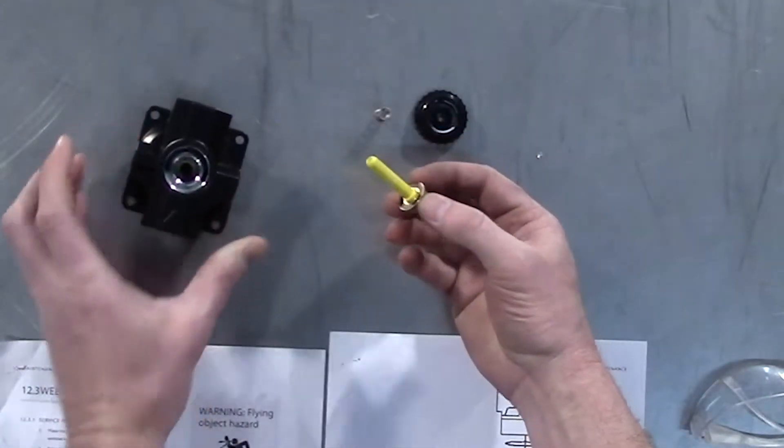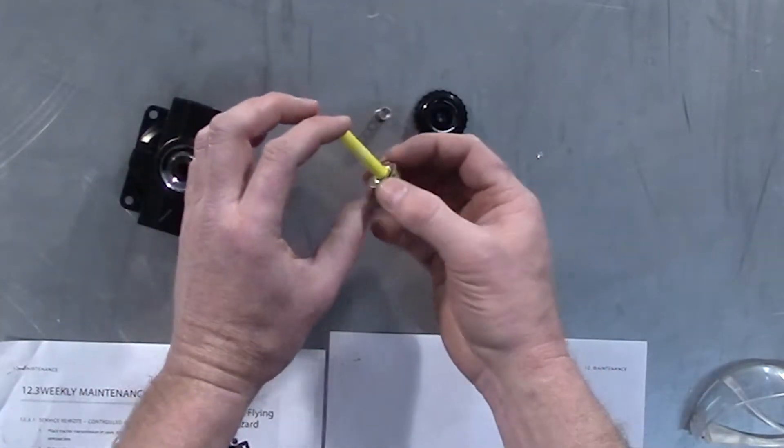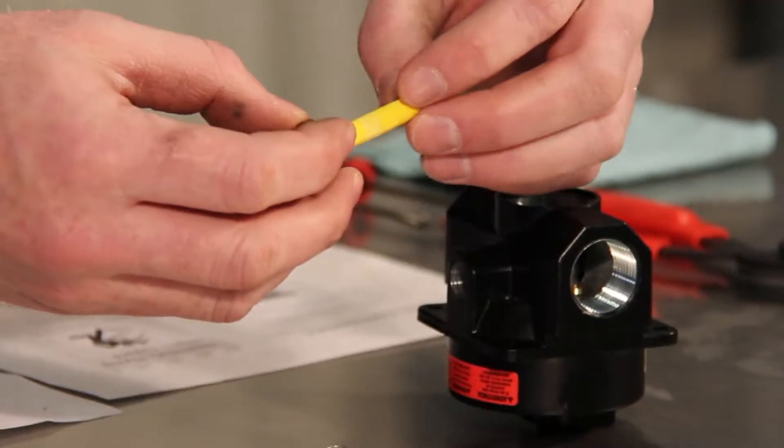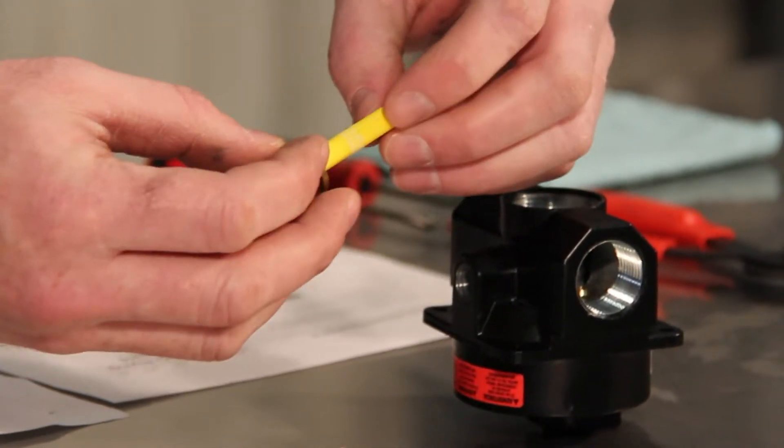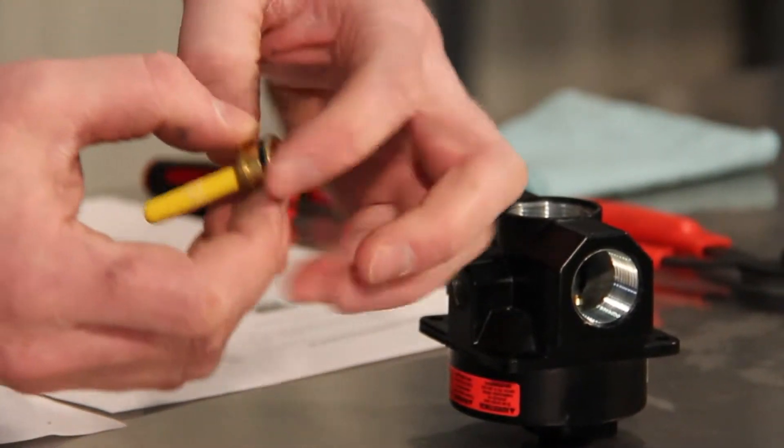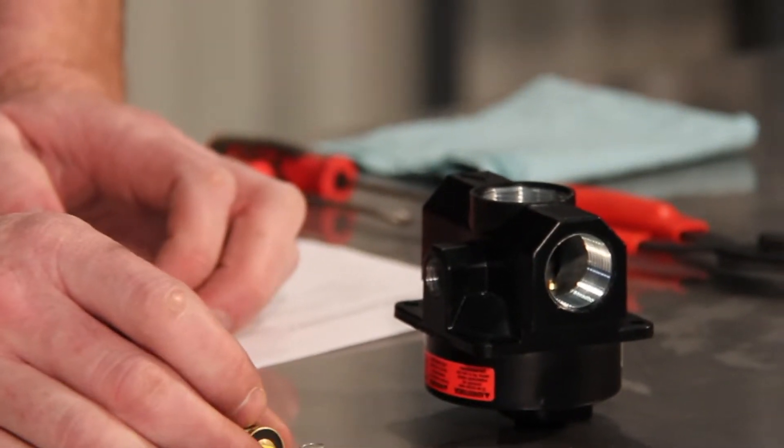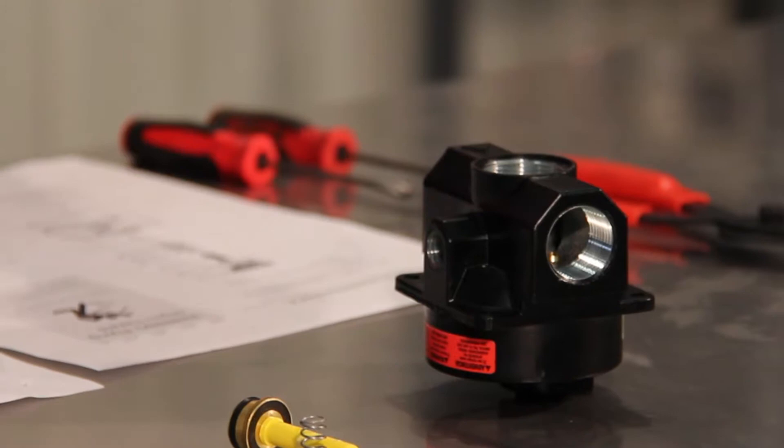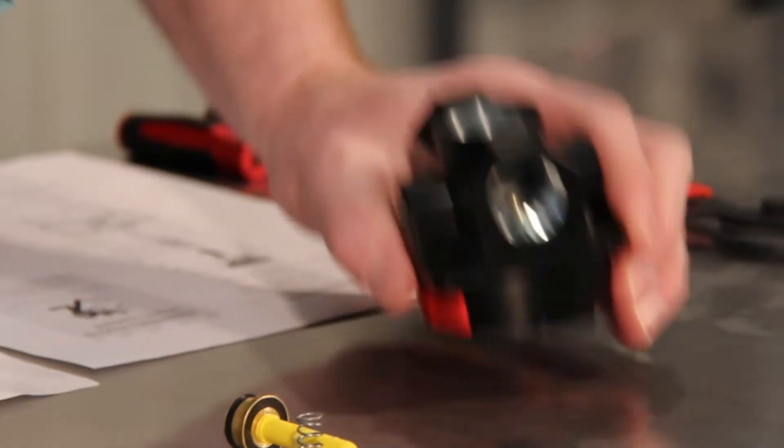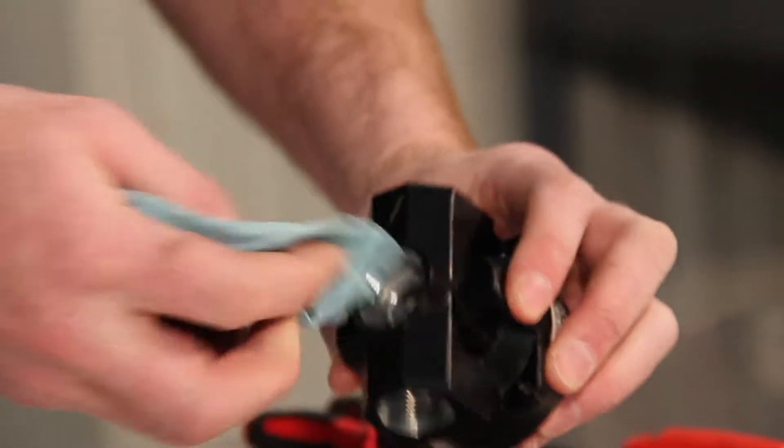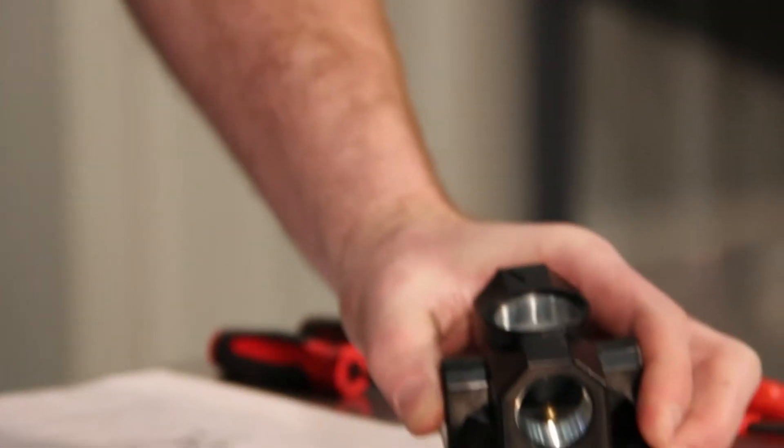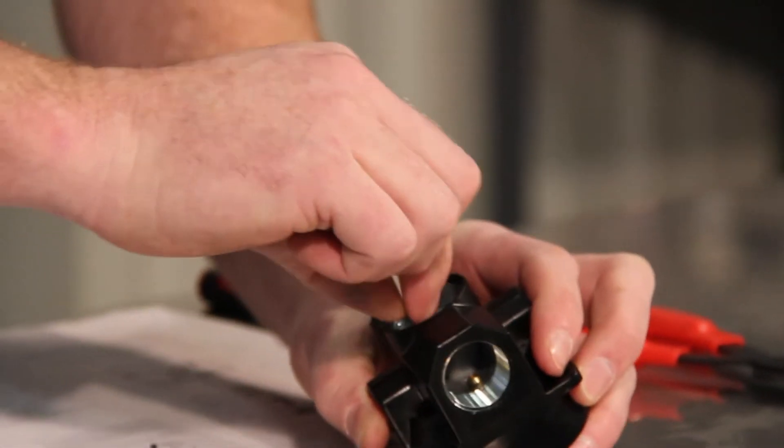After the piston assembly is removed, we want to inspect to make sure it's got proper lubrication. We want to inspect for any scoring, any O-ring damage around the top of the assembly there. Those sort of things would lead to air pressure failures. We want to clean out the old lubricant with a rag and cotton swab assembly.